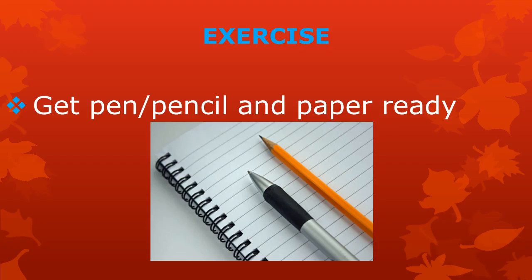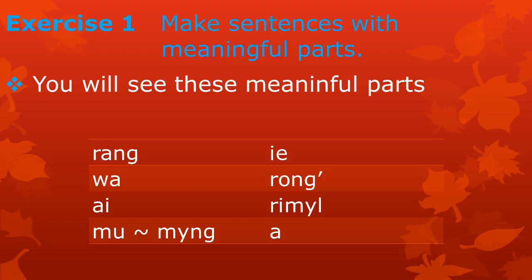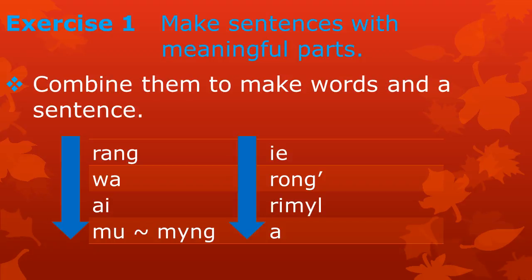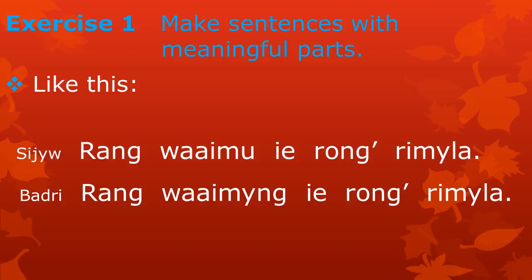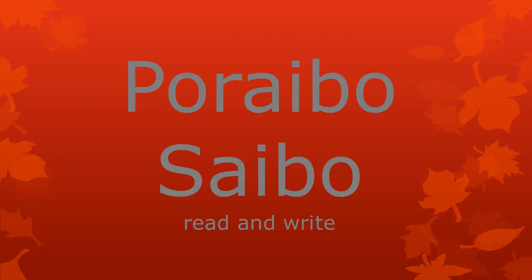Now let's do an exercise — an exercise in writing. Please get a pen or pencil and a piece of paper ready. Exercise one: Make sentences with meaningful parts. You will see meaningful parts in a table. Put them together to make words and sentences. There will be six sentences in this exercise. Each table will be shown for six seconds, so pause the video when necessary. Ready? Here we go.